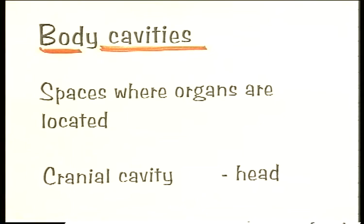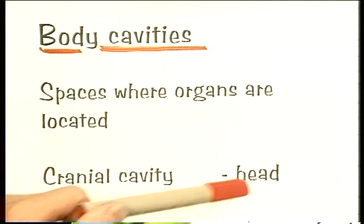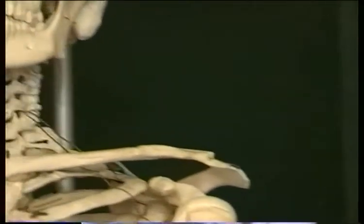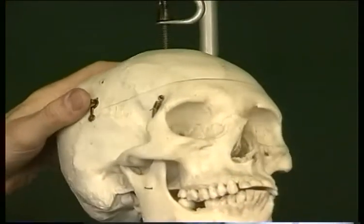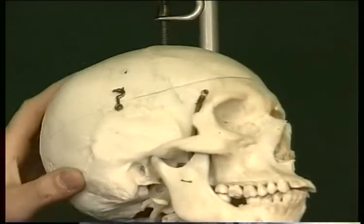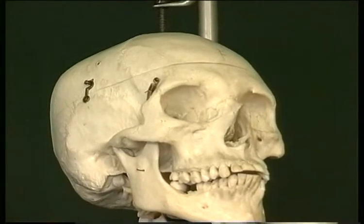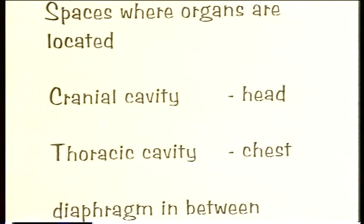The first one we're going to consider is the cranial cavity. Cranium means to do with the head, so the cranial cavity is located in the head — that is the space inside the skull. All of the space inside the skull is the cranial cavity, located inside the head.